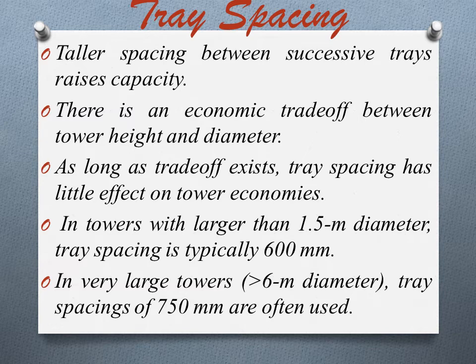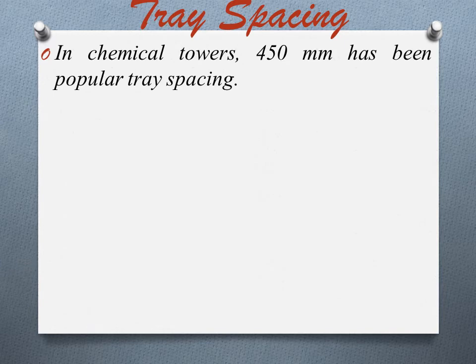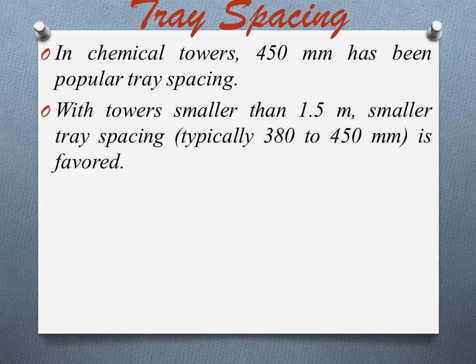However, in very large towers whose diameter is greater than 6 meter, tray spacing of 750 millimeter is often used. In chemical towers, as distinct from petrochemicals, refinery and gas plants, 450 millimeter has been a popular tray spacing. With towers smaller than 1.5 meter, tower walls are reachable from the manway, so there is no need to crawl and it becomes difficult to support thin and tall columns. Smaller tray spacing, typically 380 to 450 millimeter, is favored.